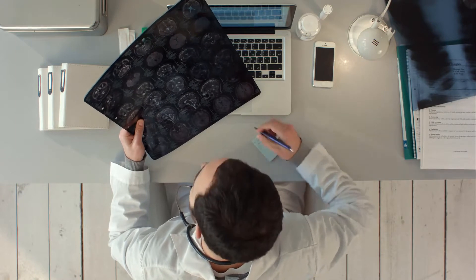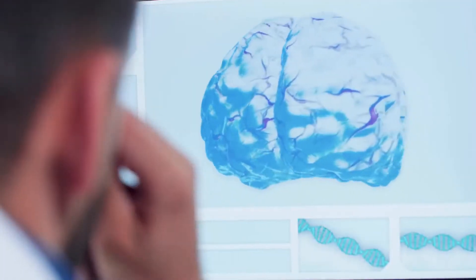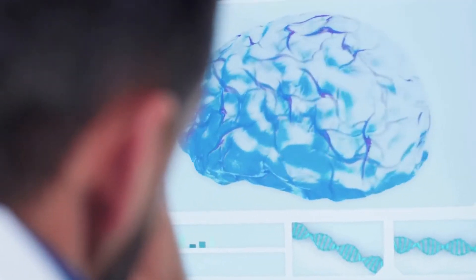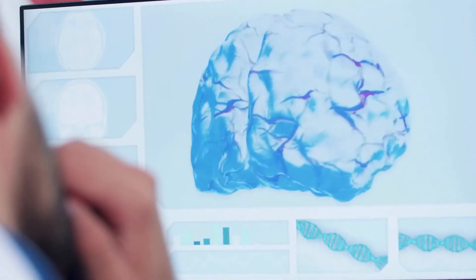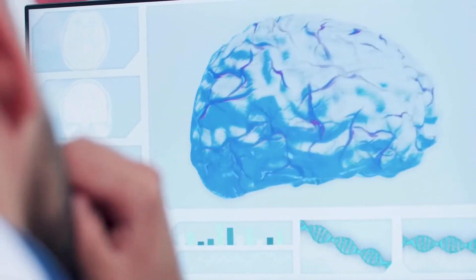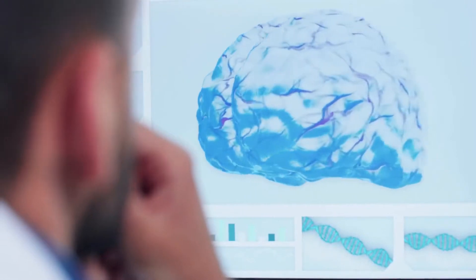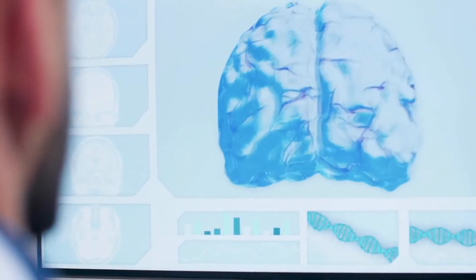Strokes that occur within the cerebellum can be ischemic or hemorrhagic. Ischemic strokes are more common and are caused by obstructed arteries. Hemorrhagic strokes are caused by arterial hemorrhages. A hemorrhagic cerebellar infarction is a rare occurrence.